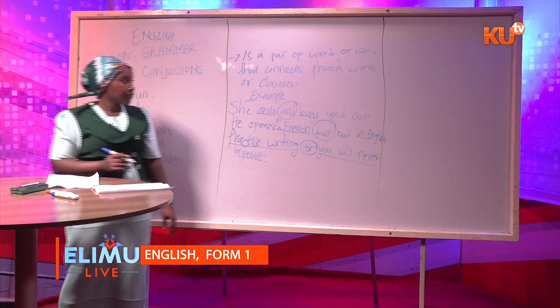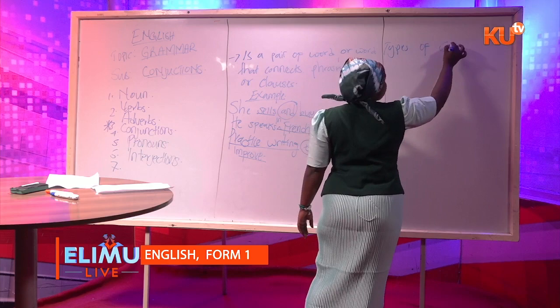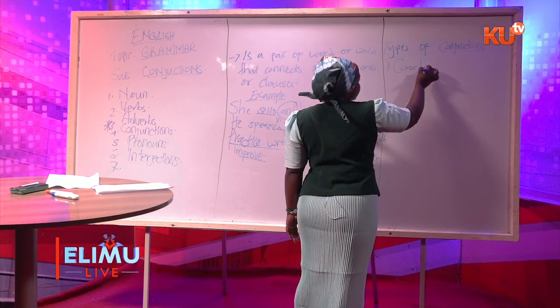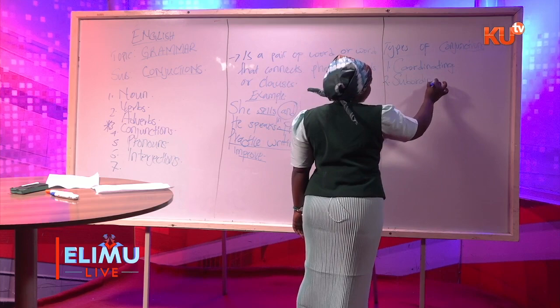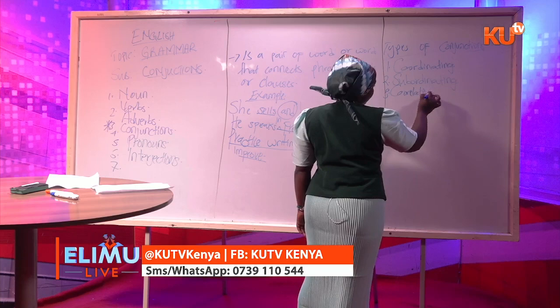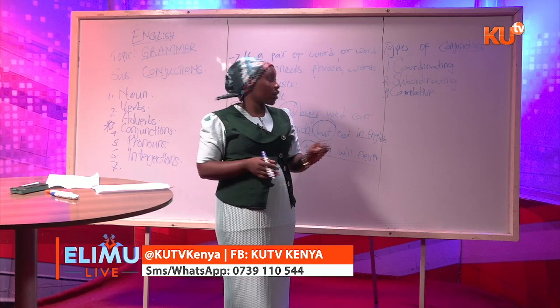In English, you have types of conjunctions. The first one is coordinating conjunctions, which is covered in form one. If time allows, we also look at subordinating conjunctions.